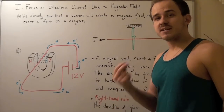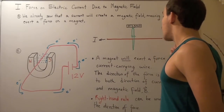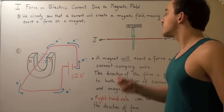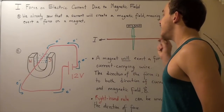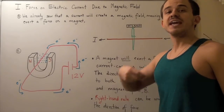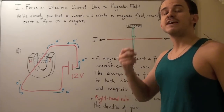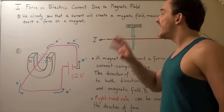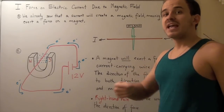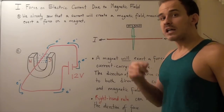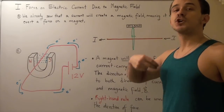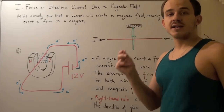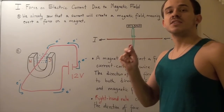What happens if I take a magnet and place it next to my wire? The magnet will feel a force due to the current carried in the wire. In other words, a current moving through a wire will exert a force on a magnet. Now I want to ask: is the reverse true? Can a magnet exert a force on our current in the wire? And the answer is yes — experimentally, scientists confirmed this is true.